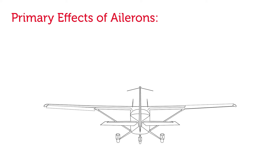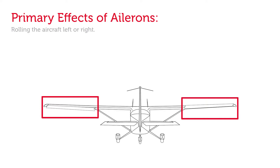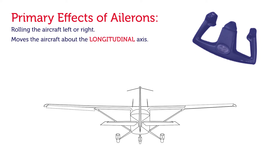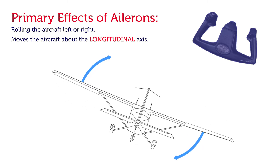The ailerons are located on the outboard sections of the wing and allow the aircraft to roll left or right. Rolling the control column to the right causes the left aileron to go down and the right aileron to go up. As the left aileron goes down, we change the chord line and angle of attack, generating more lift. That lift pushes the left wing up and rolls the aircraft over to the right.